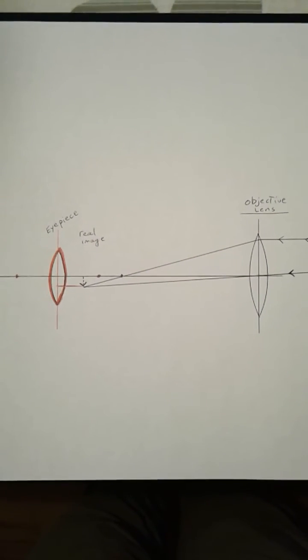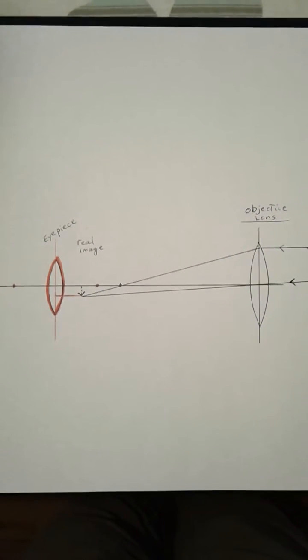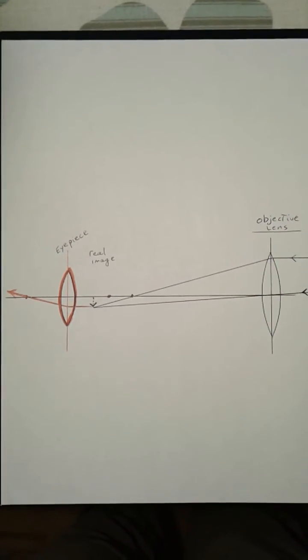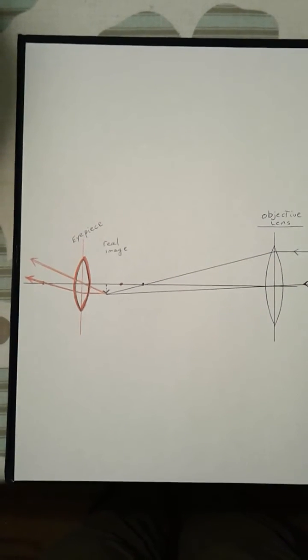The real image acts like an object for the eyepiece. A light ray goes in parallel to the principal axis and goes out through the focus. The light ray that goes through the center just keeps on going.